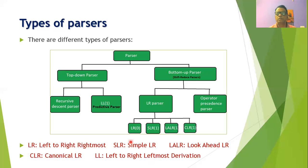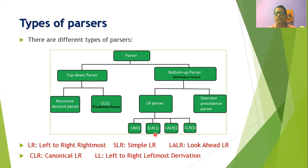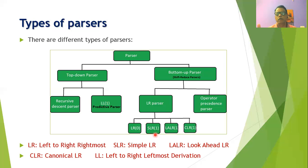LR parser is one of the popular parsing techniques and is used for many high-level languages. By using LR parser we can cover almost all types of grammars. The 0 or 1 in the bracket indicates the number of look-ahead tokens we need to see before making a decision. To avoid backtracking it is necessary to see one look-ahead token. Another type of bottom-up parser is the operator precedence parser, useful for operator grammar.